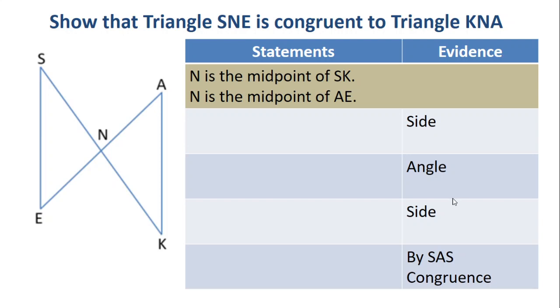All right, so here we go. We've got N is the midpoint of SK, so you should mark SN and NK equal. That's this first one. So why is that? So it's the midpoint.